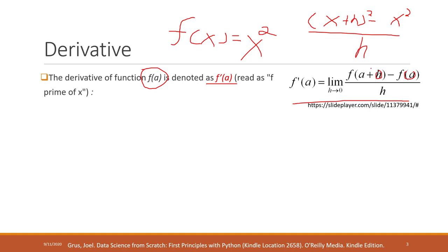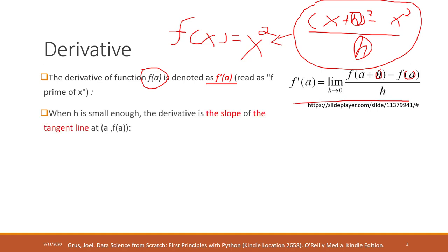The derivative of this function is: when h is very very small, close to zero, that value is the derivative of this function. If you look at it on a chart, when h is small enough, the derivative is the slope of the tangent line of that function at a specific value — for example, at this point where x equals 2.